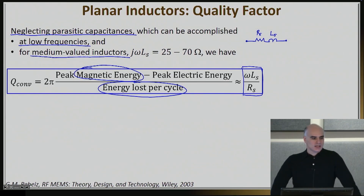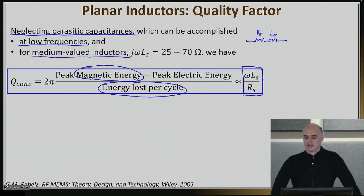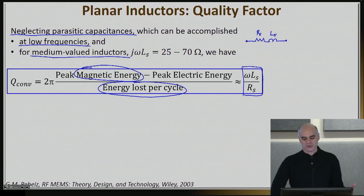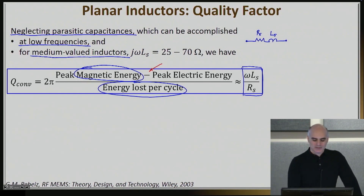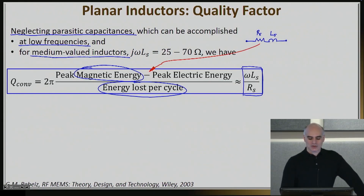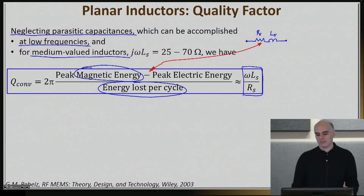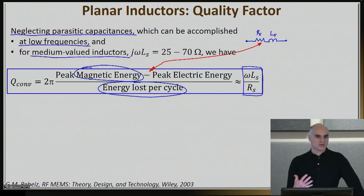That makes physical sense: if I reduce my resistance by a factor of two — perhaps by building a thicker metal — then it makes sense that my Q should increase by a factor of two. If you pay attention to this definition, you'll find that we're basically subtracting the electric energy in the inductor. In this simple RL model there is no electric energy stored, but in more complicated models, electric energy goes to parasitics and is subtracted from the Q definition.